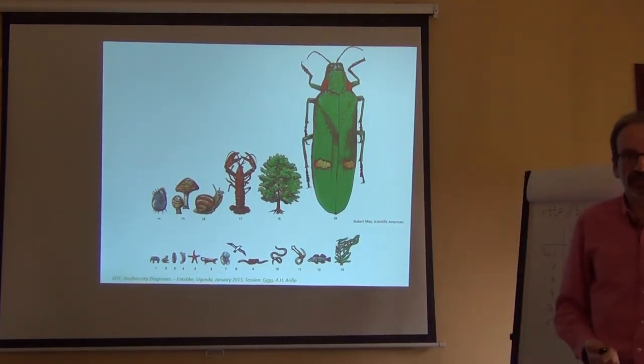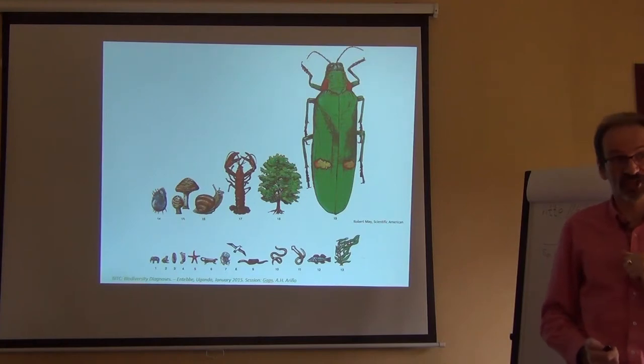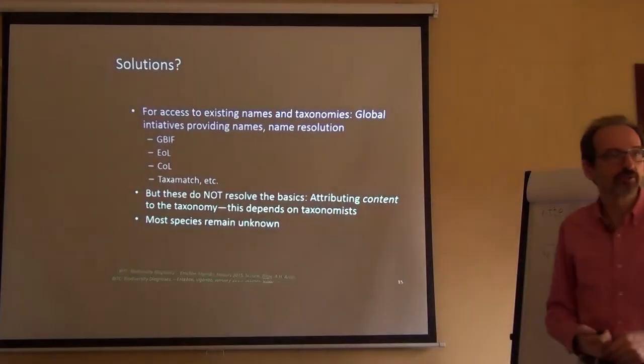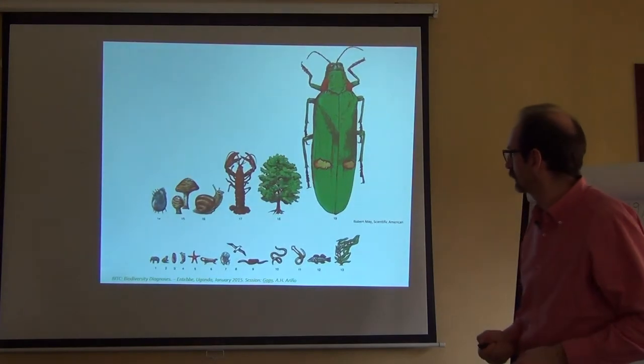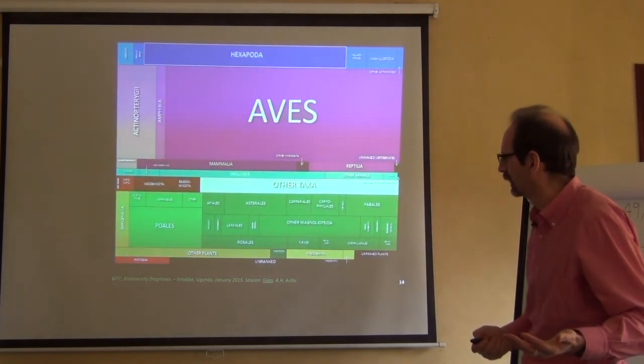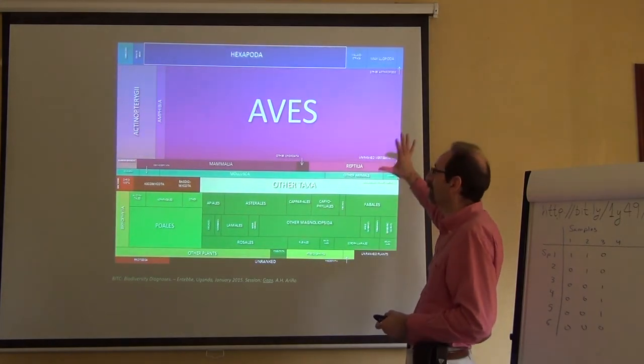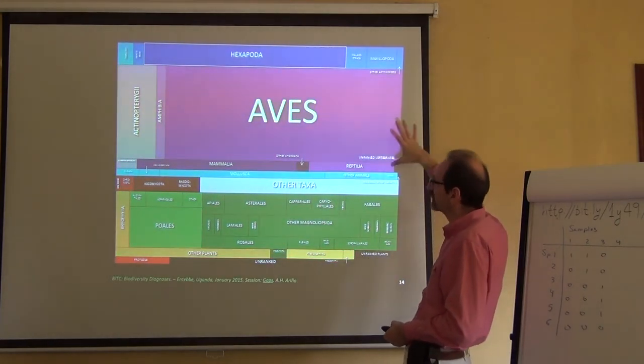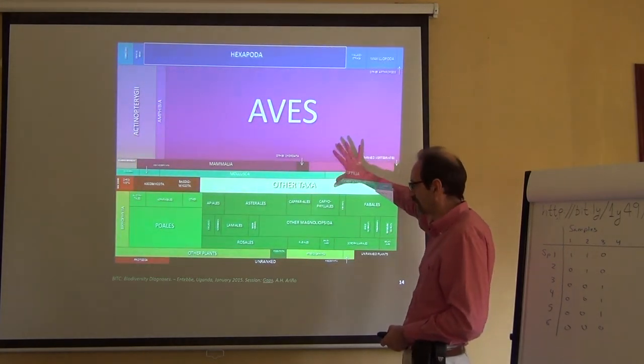And what we internally know, we know a lot about vertebrates, we know less about invertebrates, is actually what exists in the current knowledge, in the datasets. Let's look at this tree map. This is a tree map. The surface... Come on. Where are you? Yeah, here. A tree map is a representation of the amount of entities, or in this case, the amount of records. The size of each tile is proportional to the amount of records that exist, in this case, in GBIF.